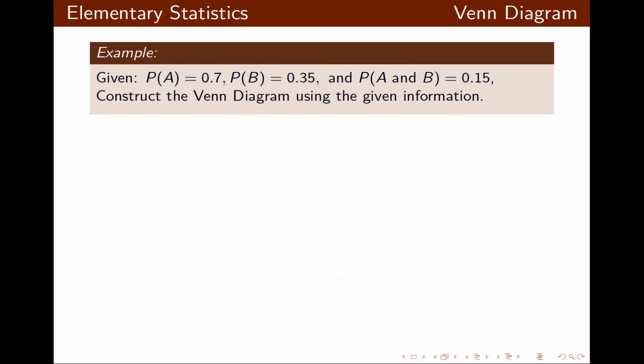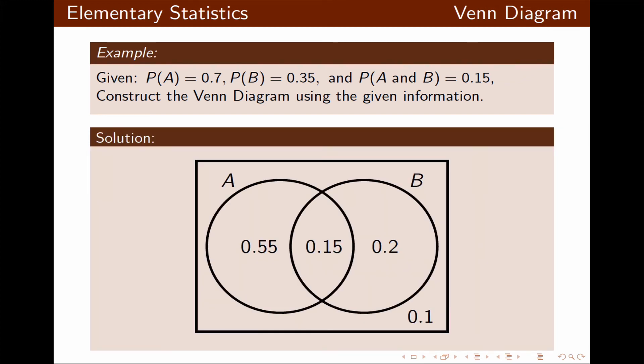Now for a numerical example: we are given the probability of A, probability of B, and probability of A and B. We want to construct a Venn diagram. Probability of A and B is the overlap, so we start with 0.15 for the overlap. We subtract 0.15 from 0.70 to get A only = 0.55, and subtract 0.15 from 0.35 to get B only = 0.20. To make everything add up to 1, we place 0.10 outside the circles but inside the rectangle.